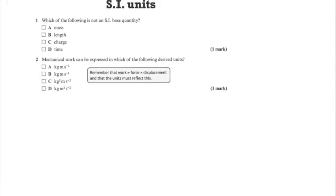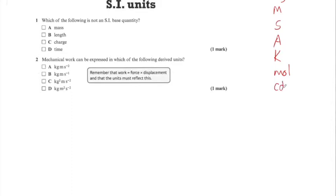They are the kilogram, the unit of mass. The unit of length is measured in meters. The unit of time is measured in seconds. The unit of current is measured in amps. The unit of temperature is measured in Kelvin. The unit of amount of substance is the mole, and the unit of light brightness is the candela.